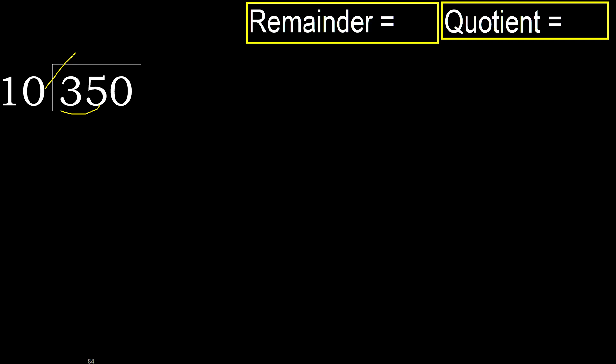Multiply 10 by which number is nearest to 35 but not greater. Multiply by 4: 40 is greater. Multiply by 3: 30 is not greater.